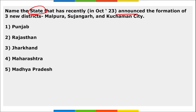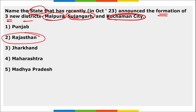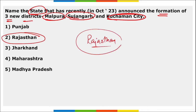Rajasthan recently announced the formation of three new districts: Malpura, Sujangarh, and Kuchaman City. Rajasthan now has a total of 53 districts.